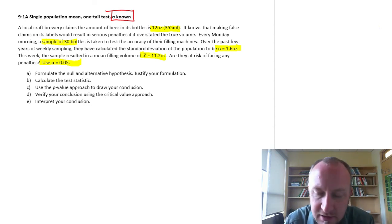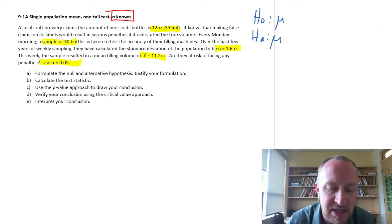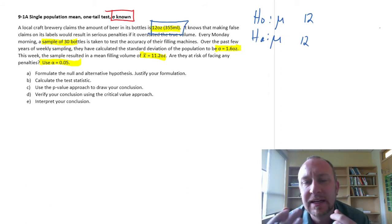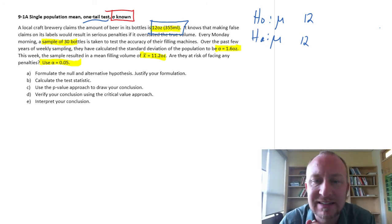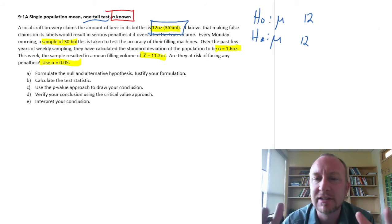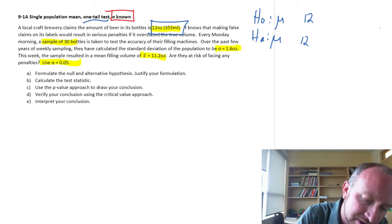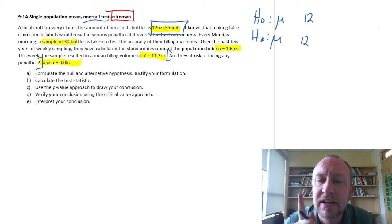The first step: formulate the null and alternative hypotheses. We're testing a single population mean, so that's mu as the population mean. Our hypothesized value is 12 ounces. Now the question is, what kind of test is this? Thankfully we have a clue—it's a one tail test. So do I want to test an upper tail test or a lower tail test?